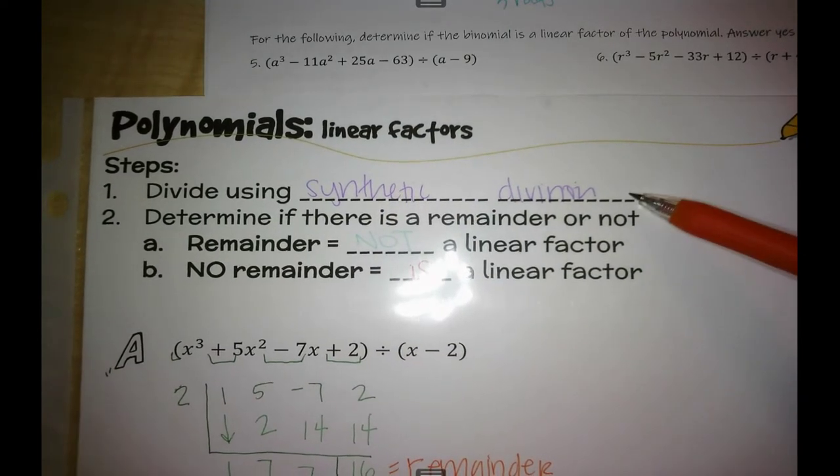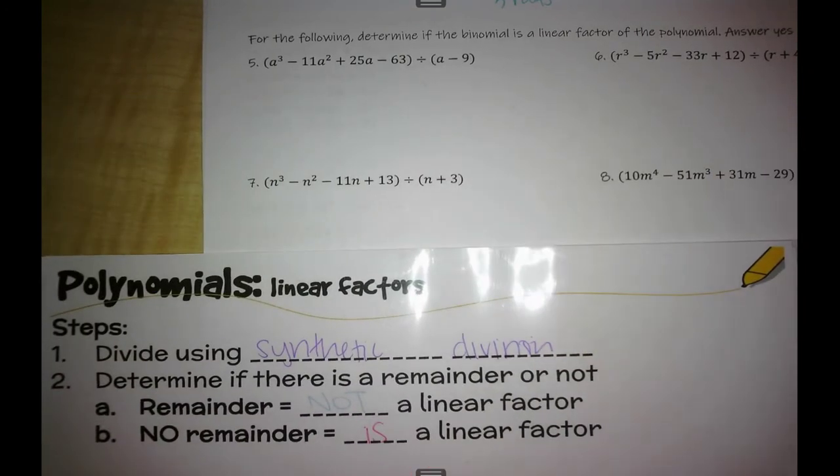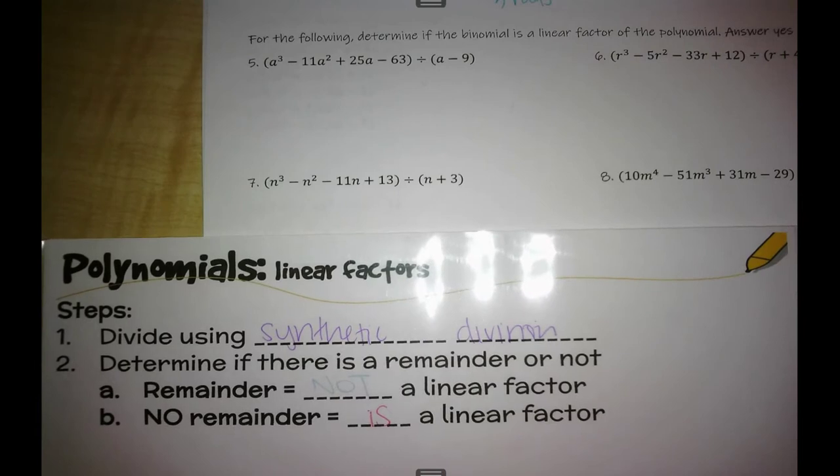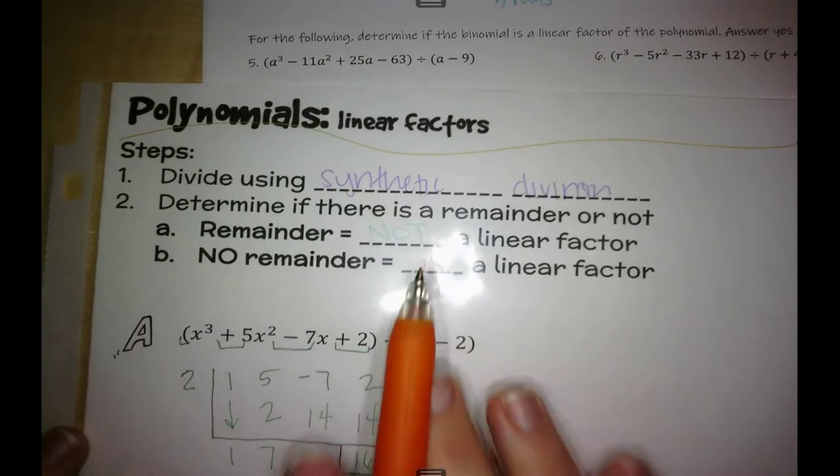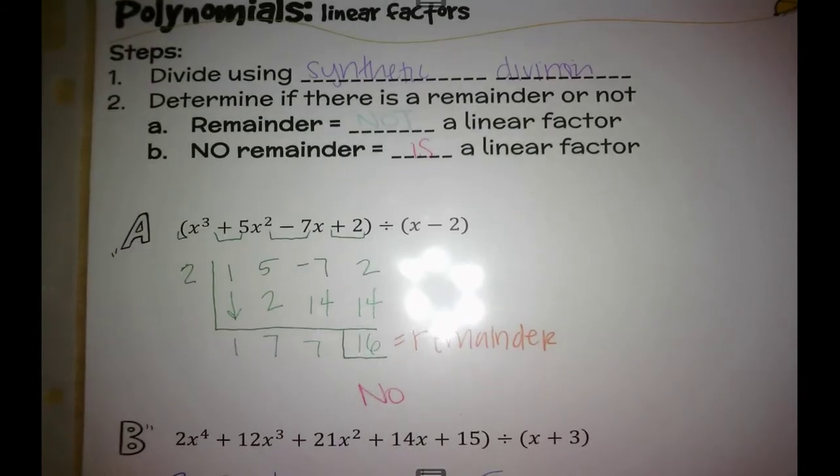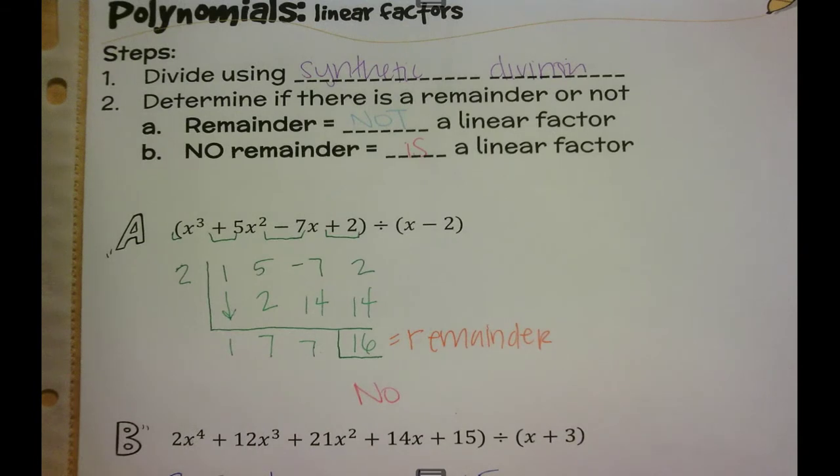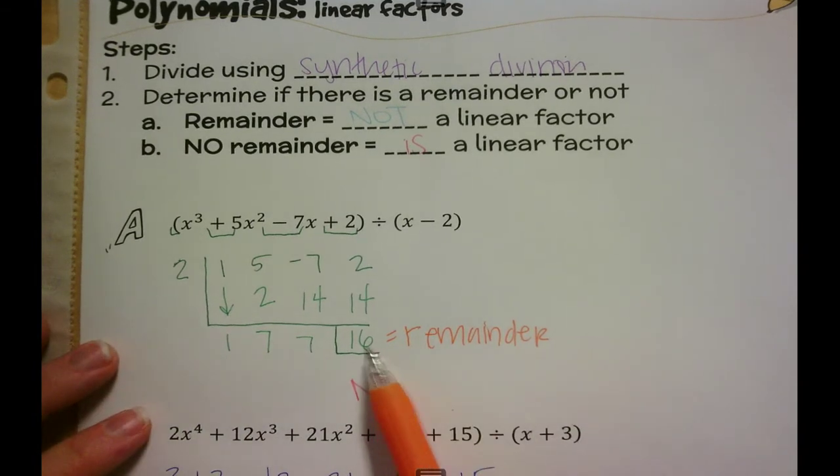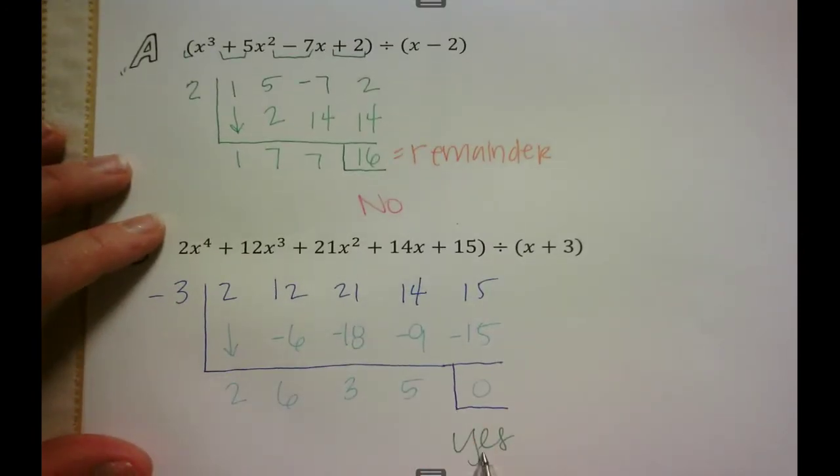Remember we're going to do our synthetic division. That's why it's already written in a division question style, so you know I need to divide. Synthetic division is the easiest one of our division ways here. If there is a remainder then my answer is no, and if there is not a remainder my answer is yes.